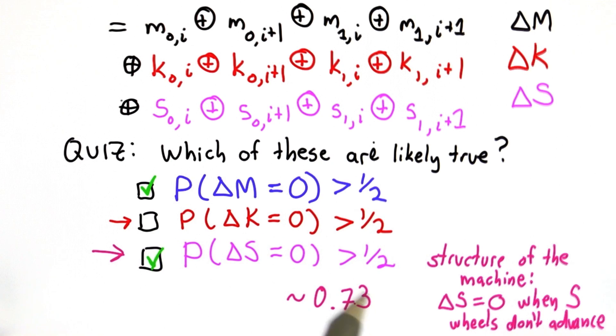And to know that, you'd have to look in more detail at the structure of the M wheels and to know how frequently the S wheels advance. And when they don't advance, we know the result is 0. When they do advance, about half the time the result will be 0.